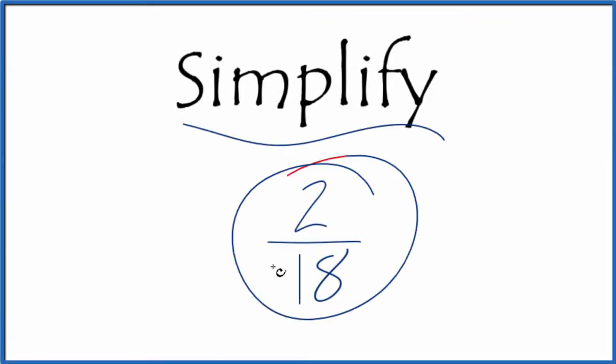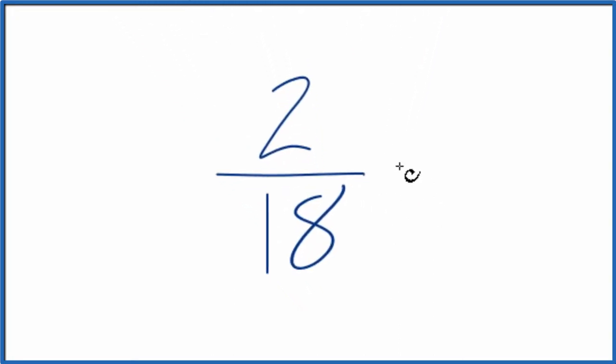Let's simplify the fraction 2/18. What we're trying to do is find another fraction that's equivalent to 2 divided by 18. It has the same value, just simplified to lowest terms.